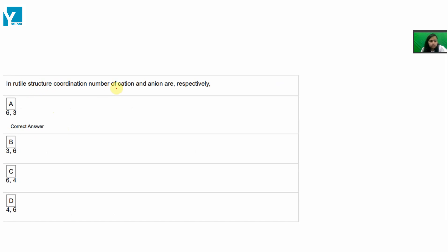In rutile structure, coordination number of cation and anion are respectively. So rutile structure is basically TiO2. What is TiO2?